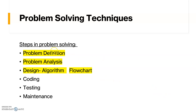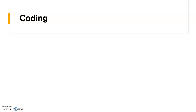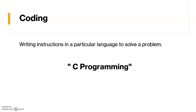We have completed learning the flowchart, which is one step in the design phase of problem solving techniques, covering problem definition, problem analysis, and designing. The next step is coding. Once your algorithm and flowchart are ready, you start writing code — a set of instructions in a particular programming language, such as machine language, assembly language, or a high-level language. We are using C programming language, and from the next lecture onwards we will learn how to write instructions in C.